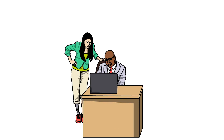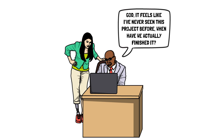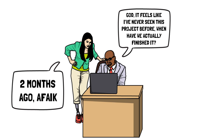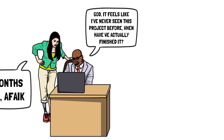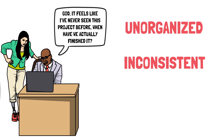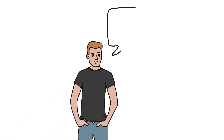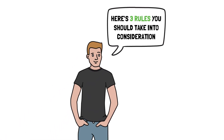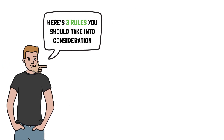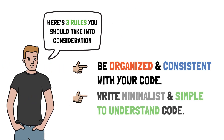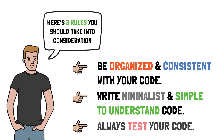Let me ask you a quick question. Has there been a moment in your programmer's life in which you looked over an old project and understood almost nothing from the code you wrote a couple of months ago? If so, this happened probably because you're writing unorganized, inconsistent, and overly complex code. This is true not only with Dart, but with any other programming language out there. From my experience, there are three rules you should follow in order to start improving the way you write code: be organized and consistent with your code, write minimalist and simple to understand code, and always test every piece of code you write.